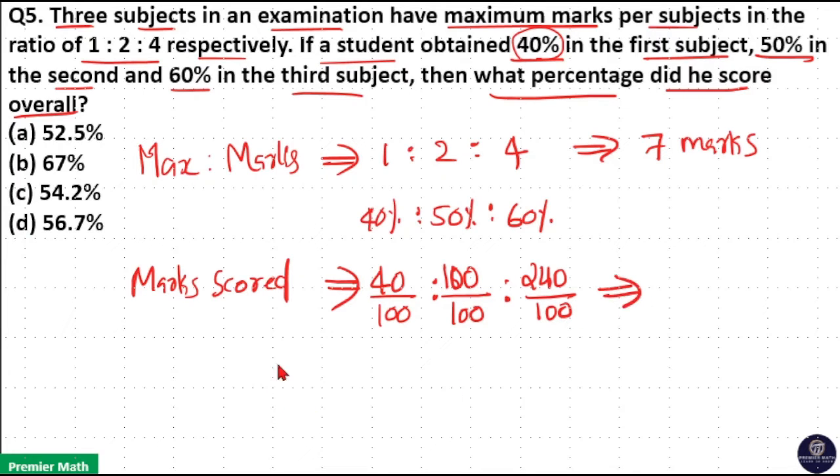Total marks scored in these three subjects equals 40 plus 100 plus 240, which is 380 by 100, or 3.8 marks out of 7.